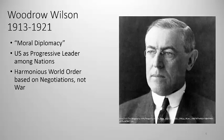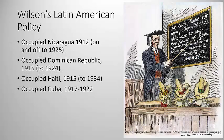Wilson's Caribbean diplomacy shows he was not as focused on foreign policy overall as his predecessors, and certainly not on the Pacific. Under Wilson, the U.S. intervened militarily in multiple countries: it occupied Nicaragua on and off from 1912 to 1925, the Dominican Republic from 1915 to 1924, Haiti from 1915 to 1934, and Cuba from 1917 to 1922.